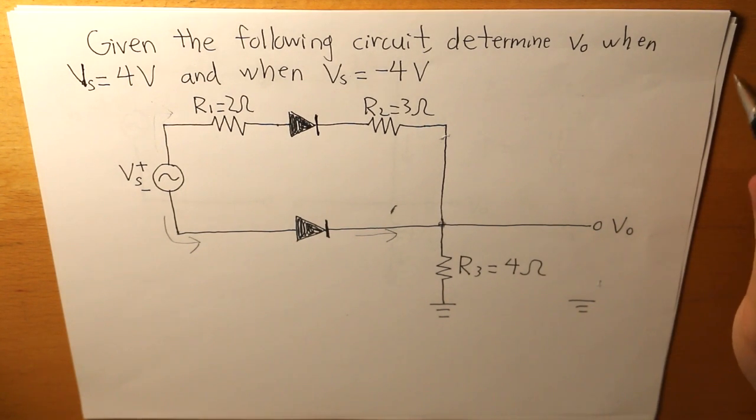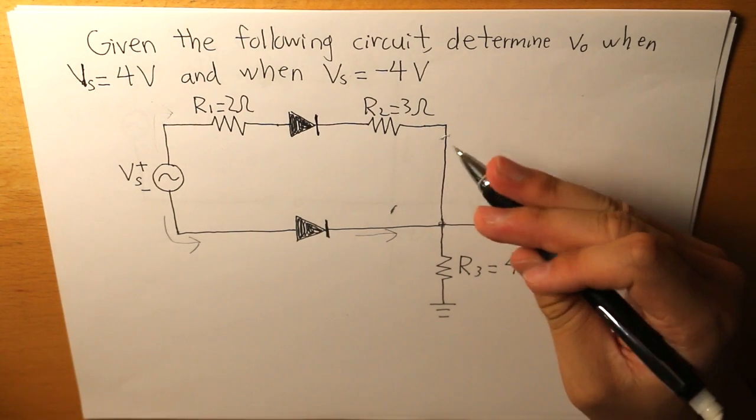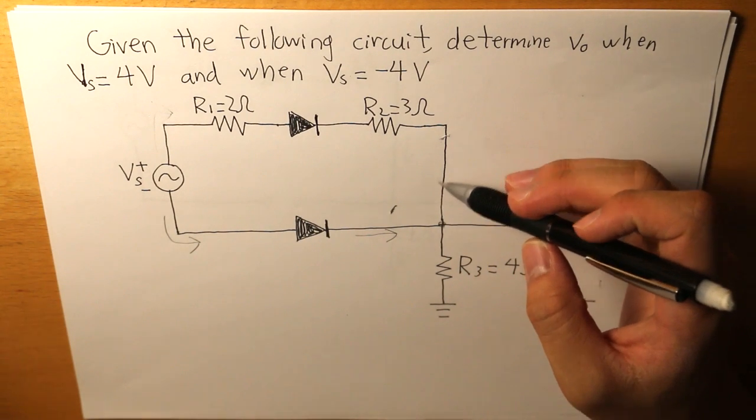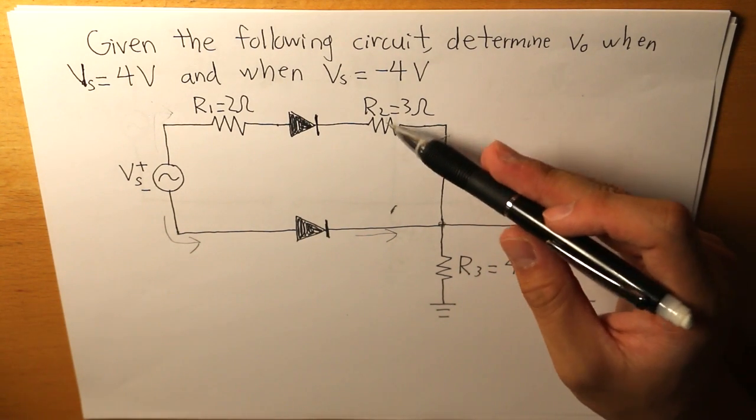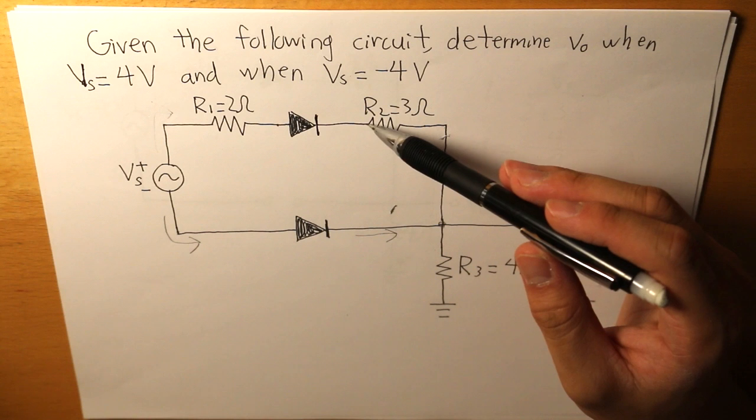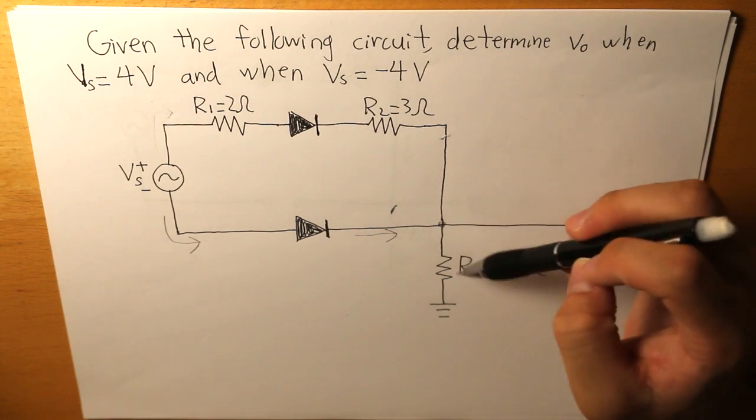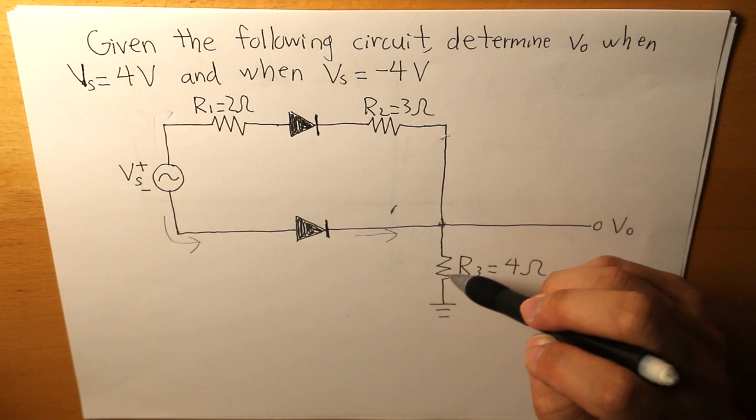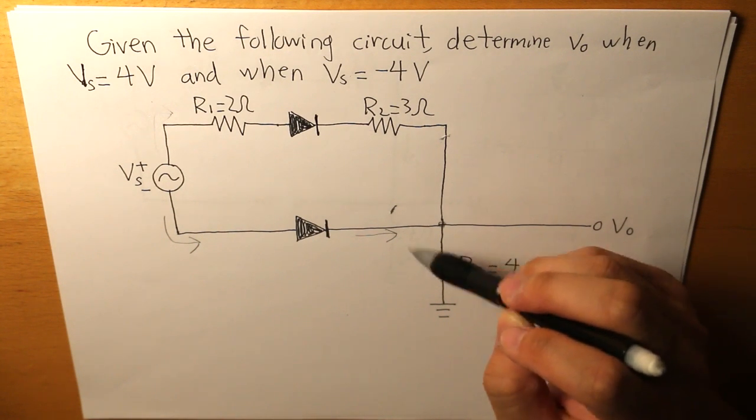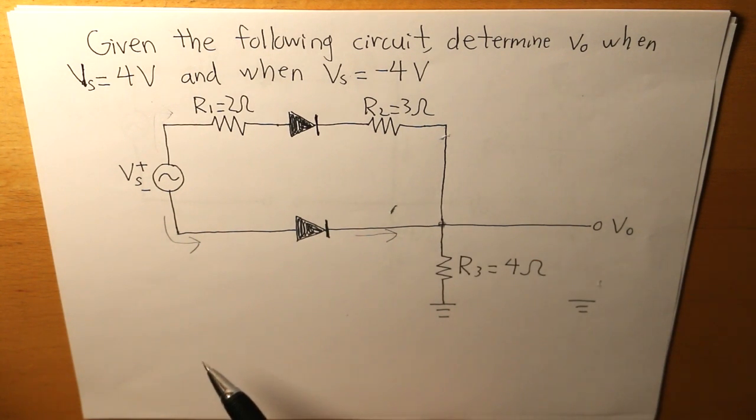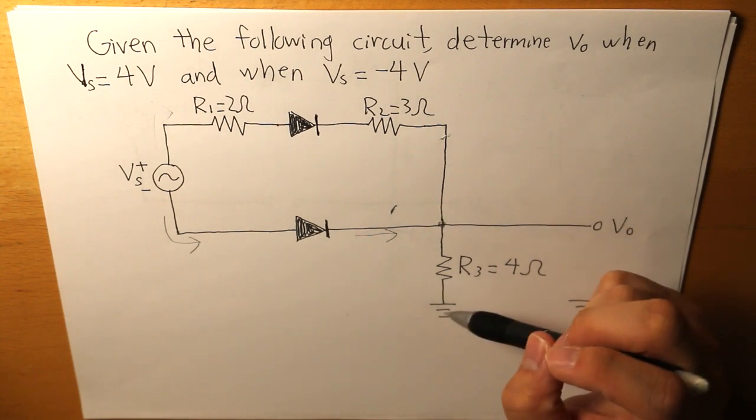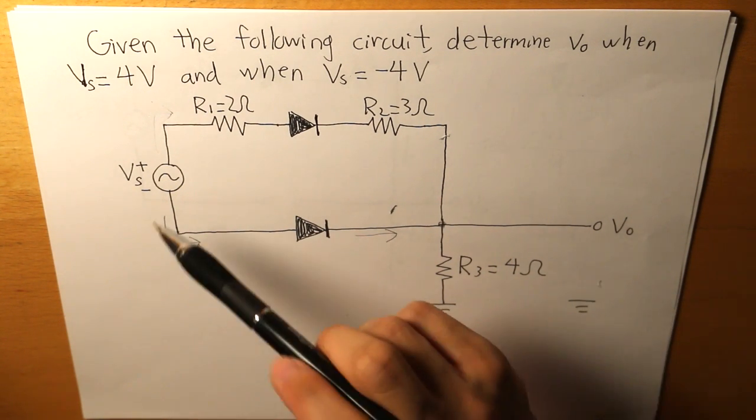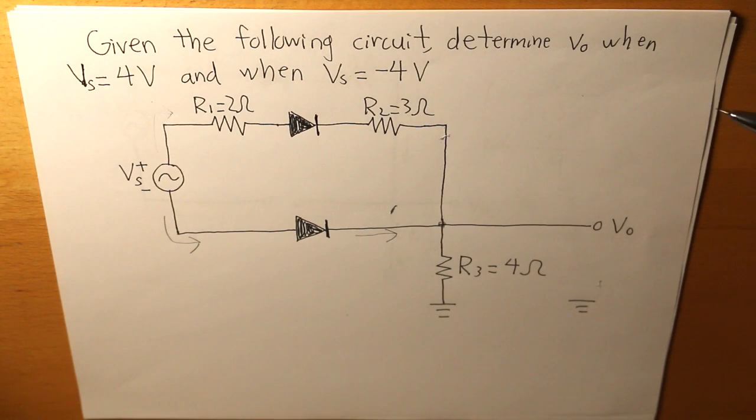Now it has two paths. One path will lead it to go through R2. And then another path would make it lead through R3. But if it leads through R3, the current would have to change direction because the ground is at a higher potential at which this negative is.